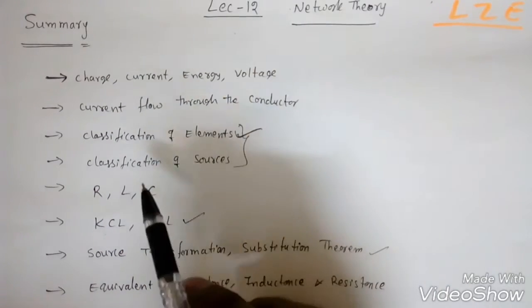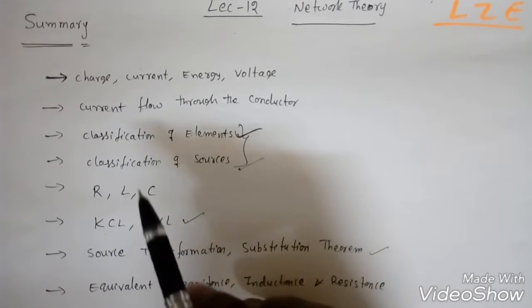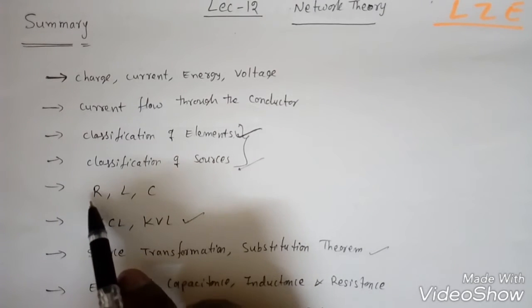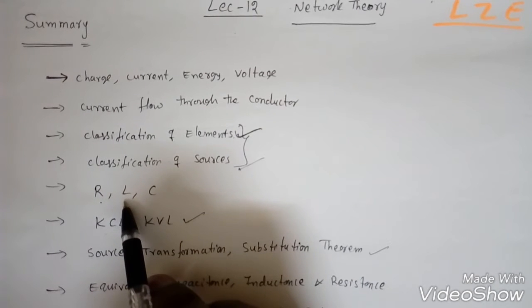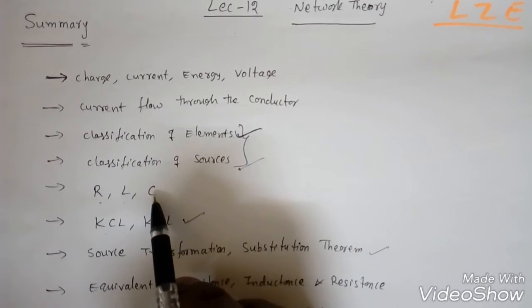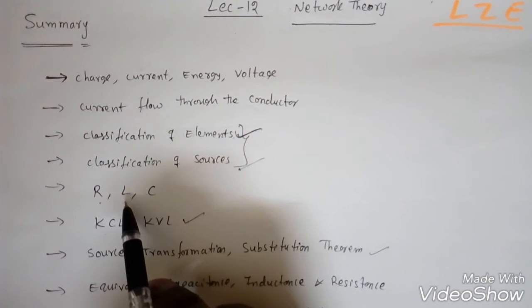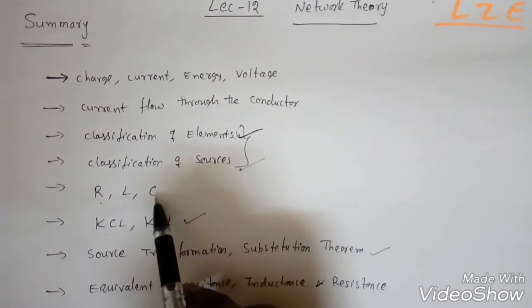Next we saw how currents flow through conductors, then classification of elements and sources. We then covered each passive element: resistance and Ohm's law, power and energy. Similarly, we covered inductance — how it stores energy in the form of a magnetic field — and capacitance, which stores energy in the form of an electric field.